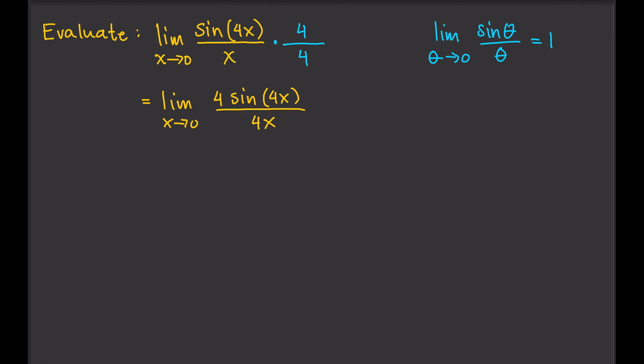But what are we going to do with the 4 here? So since that is a constant and we know that we can just write that outside, just put it outside, the limit of a constant multiple. Remember, we can treat this as one function and this one is a constant, so we can just take that out.